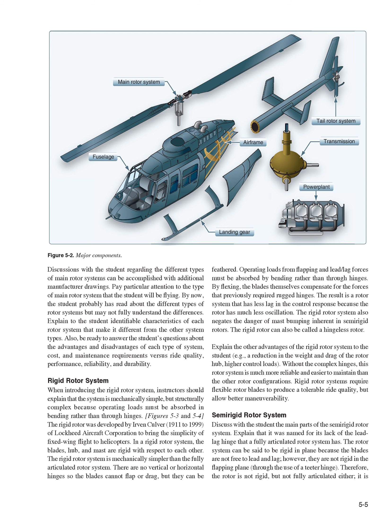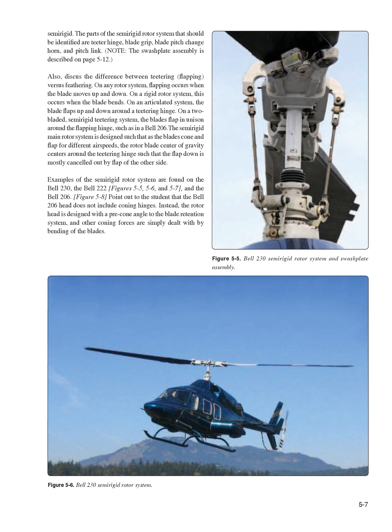Discuss with the student the main parts of the semi-rigid rotor system. It was named for its lack of the lead-lag hinge that a fully articulated rotor system has. The rotor system can be said to be rigid in plane because the blades are not free to lead and lag. However, they are not rigid in the flapping plane through the use of a teeter hinge. Therefore, the rotor is not rigid, but not fully articulated either — it is semi-rigid. The parts of the semi-rigid rotor system that should be identified are: teeter hinge, blade grip, blade pitch change horn, and pitch link. Also discuss the difference between teetering/flapping versus feathering. On any rotor system, flapping occurs when the blade moves up and down.